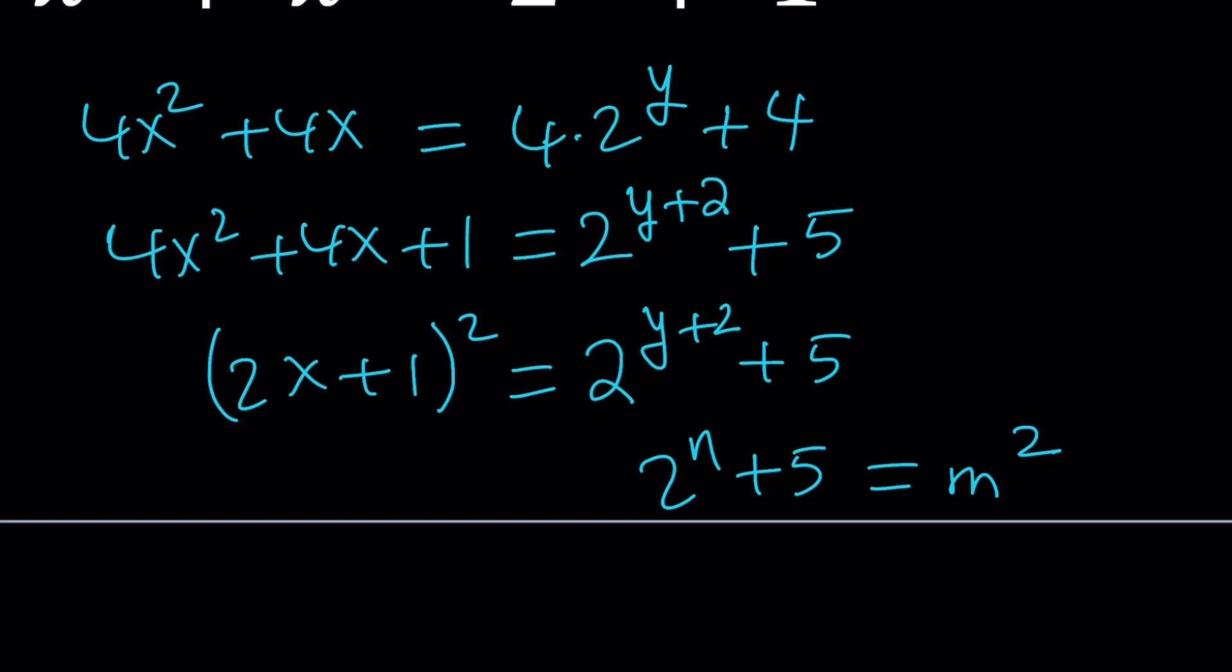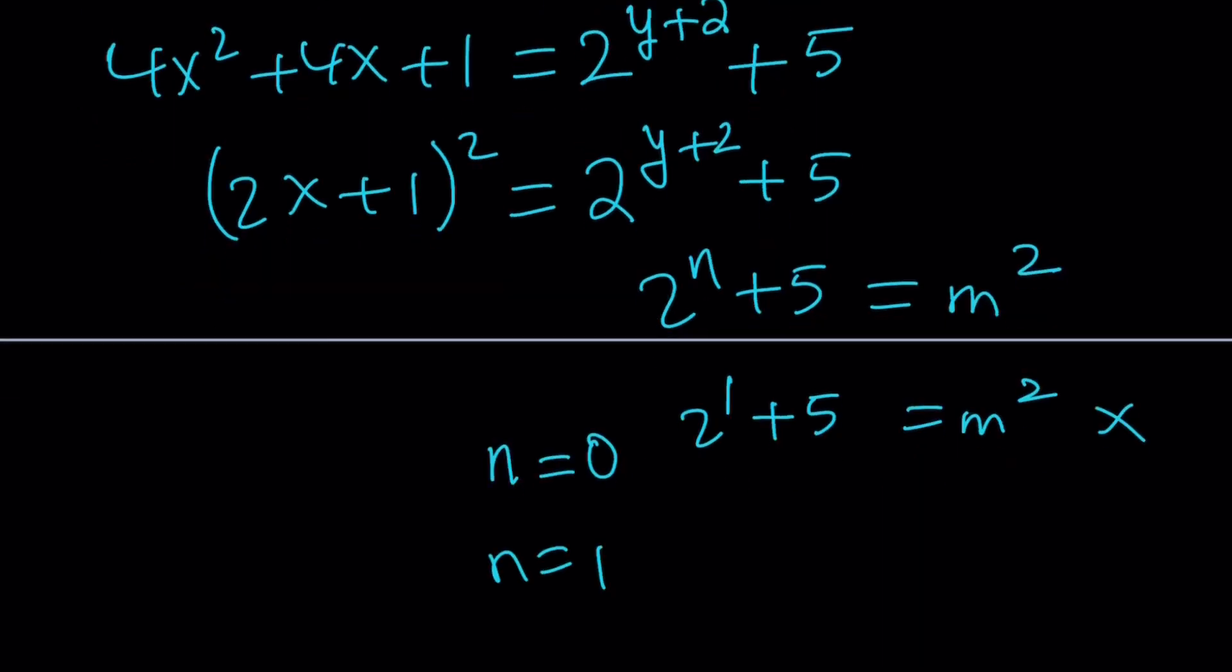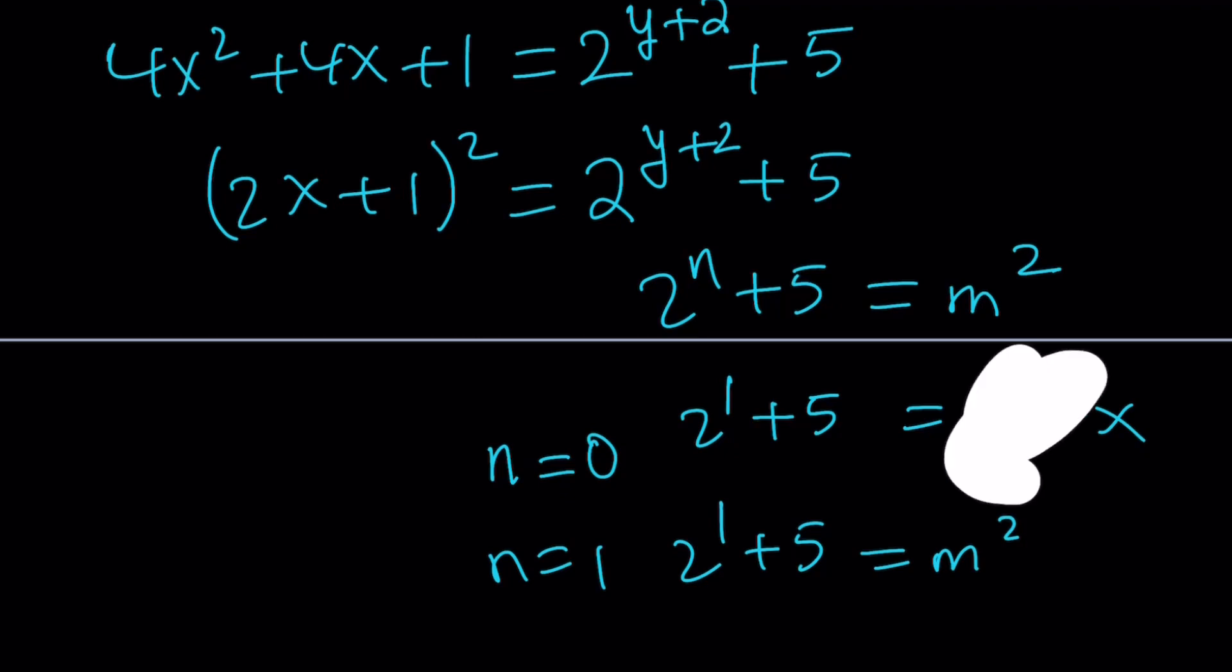Anyways, so let's look at some basic examples. For example, if n is equal to... By the way, we said integers, we didn't specify positive or negative. So suppose n is equal to 0. You got 2 to the power 0 plus 5. Is that a perfect square? The answer is no. What about n equals 1? 2 to the power 1 plus 5 is m squared, which is 7. That's not a perfect square. This is supposed to be 2 to the power 0, by the way. This is supposed to be a 6. And this is supposed to be a 7.